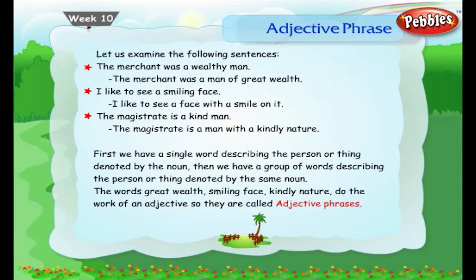First we have a single word describing the person or thing denoted by the noun. Then we have a group of words describing the person or thing denoted by the same noun. The words 'great wealth', 'smiling face', and 'kindly nature' do the work of an adjective. So they are called adjective phrases.